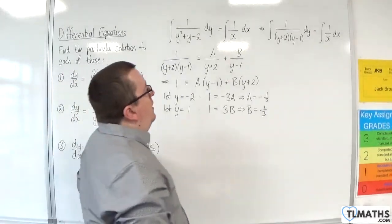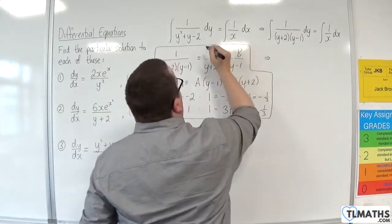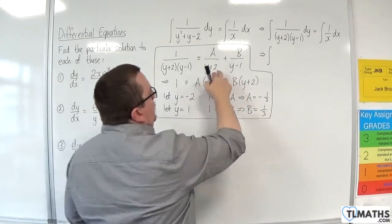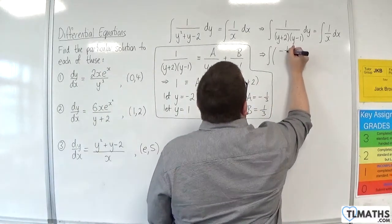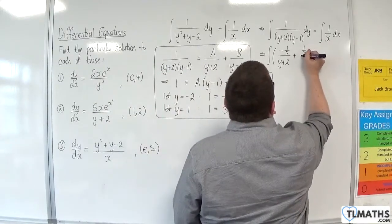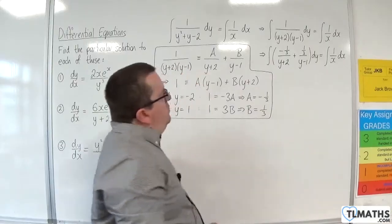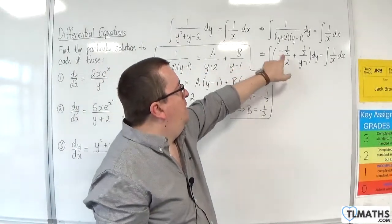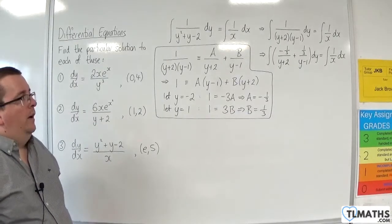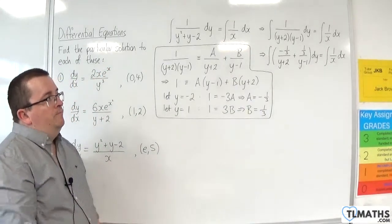Now we can write our integral. So we've got the integral of −1 third over (y+2) plus 1 third over (y−1) dy is equal to the integral of 1 over x dx. You might be wondering why I've written it that way rather than as −1 over 3(y+2) — it's just sometimes easier to work with at the integration stage.